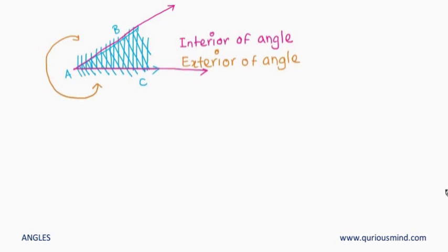Now the points, as we have seen in polygons, the points which are on the arm or which are on these rays, they are on the angle.